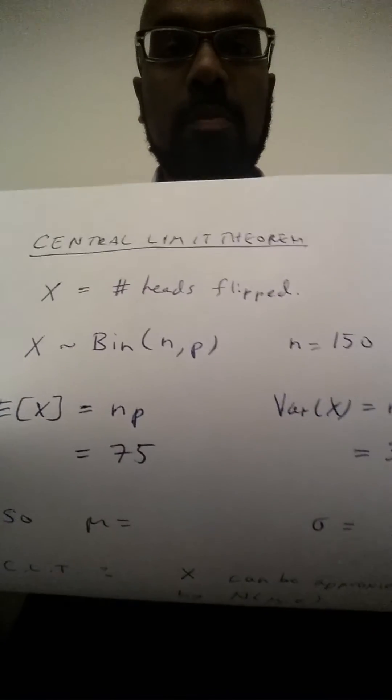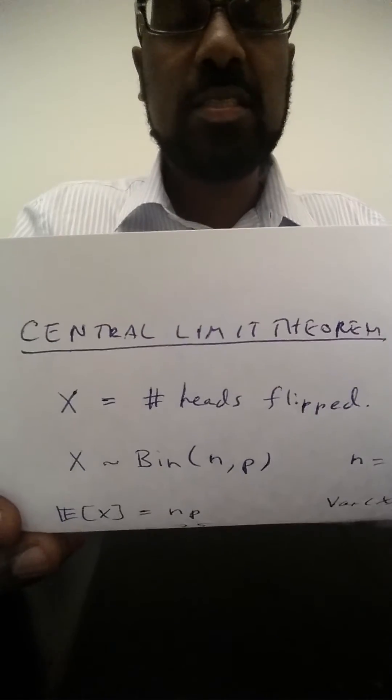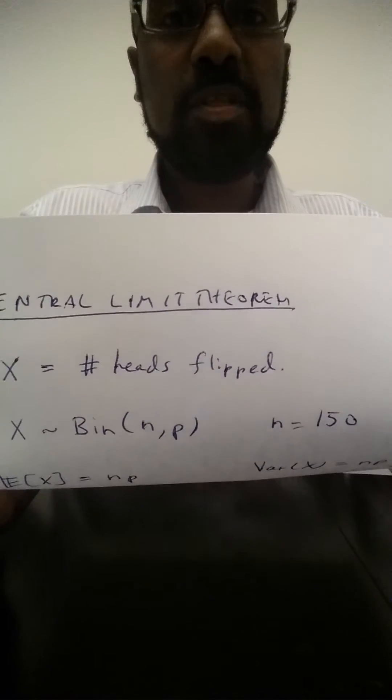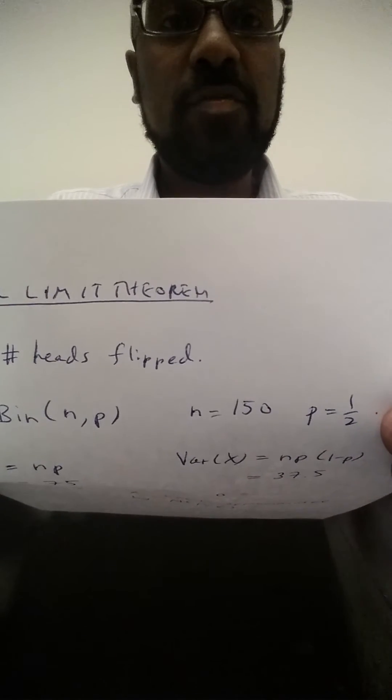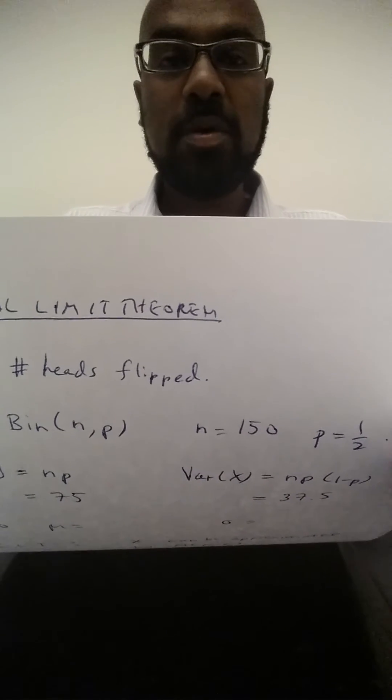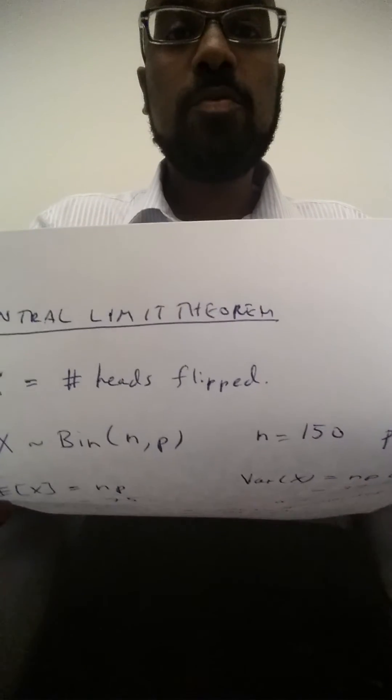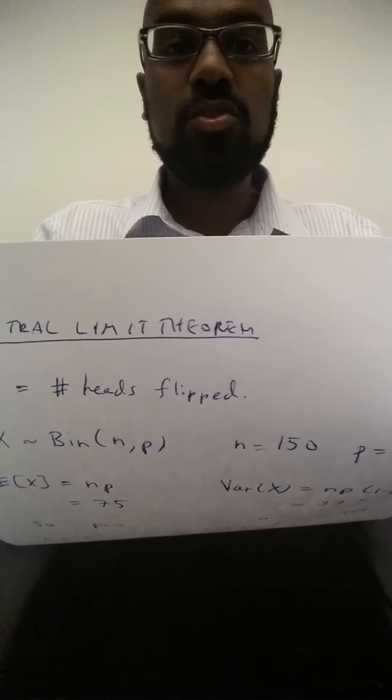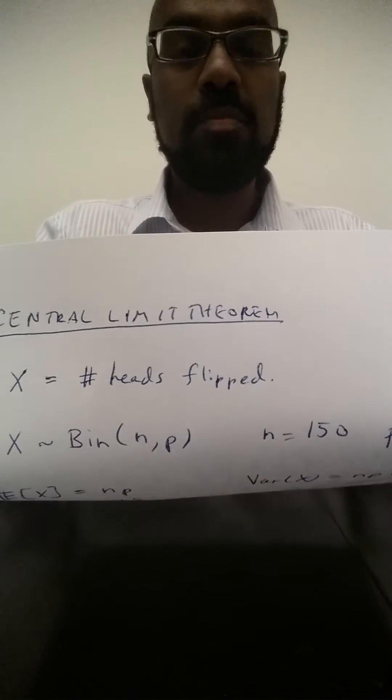Before we apply the central limit theorem, let's think about the random variable we have in question. So we construct a random variable X, thus the number of heads flipped. Then X is binomially distributed where we have n trials where n is 150 and probability 1 half. The probability of flipping heads is 1 half because the coin tossed is fair. The reason this is binomially distributed is because we have two choices for every single trial, and there's an exact probability that's constant of the outcome of each of them.